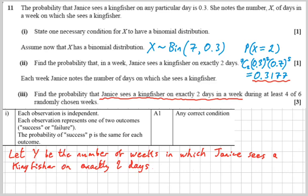And Y is binomially distributed with n now being six, because we've got six weeks that we're interested in here. And a chance of success in each of those weeks is 0.3177. And we're interested in at least four, so we want the probability that we get at least four successes, i.e. the probability that Y is greater than or equal to four.